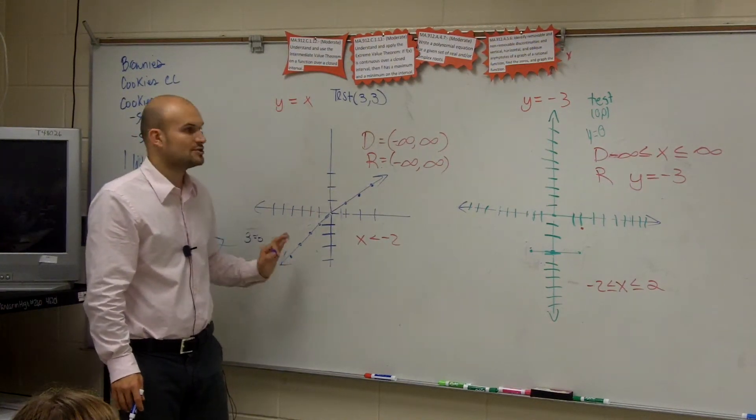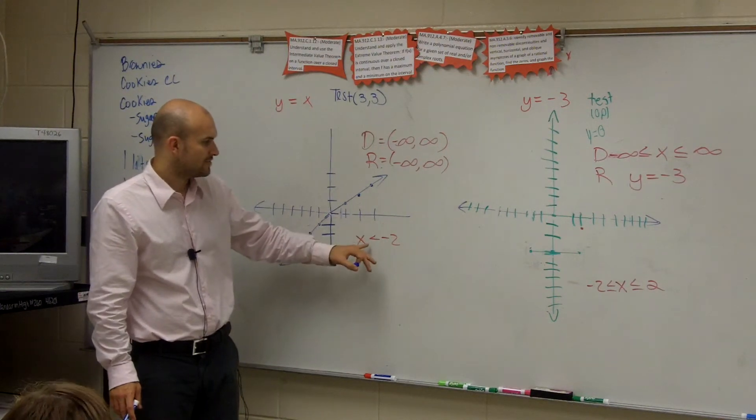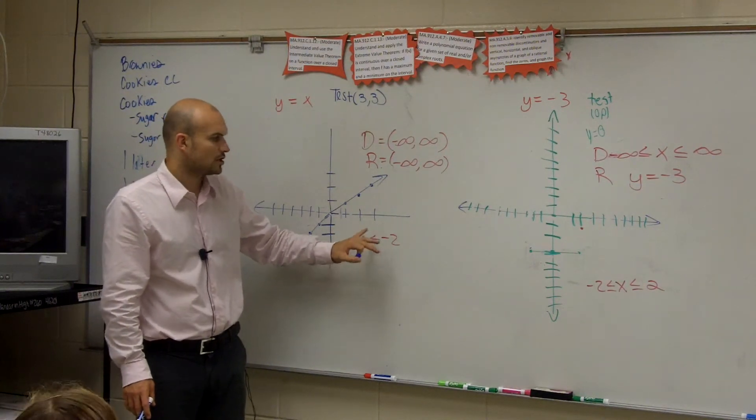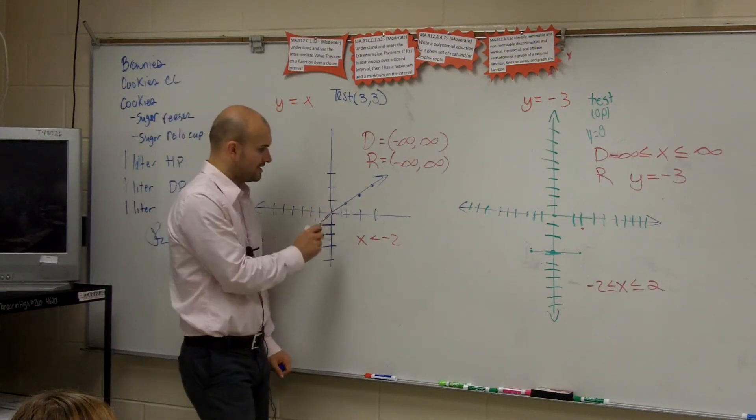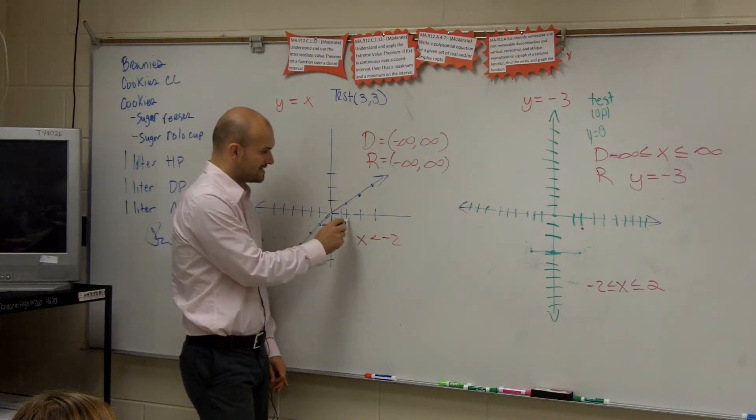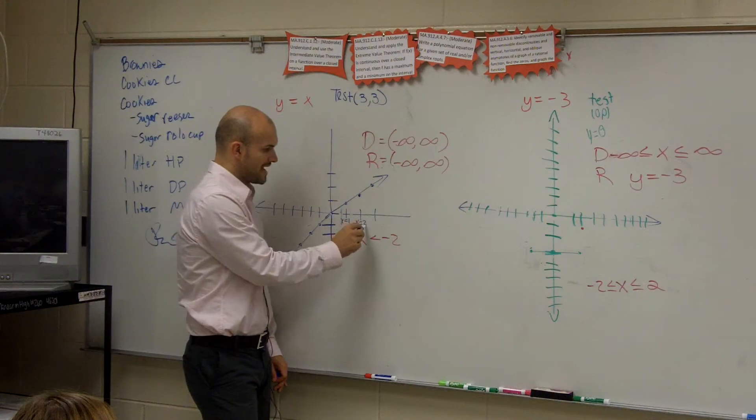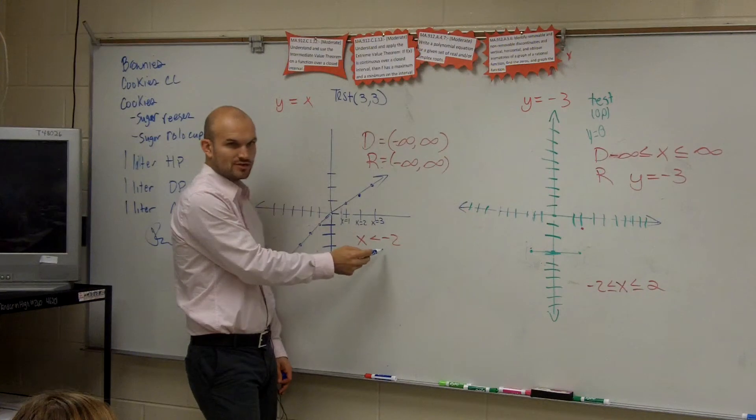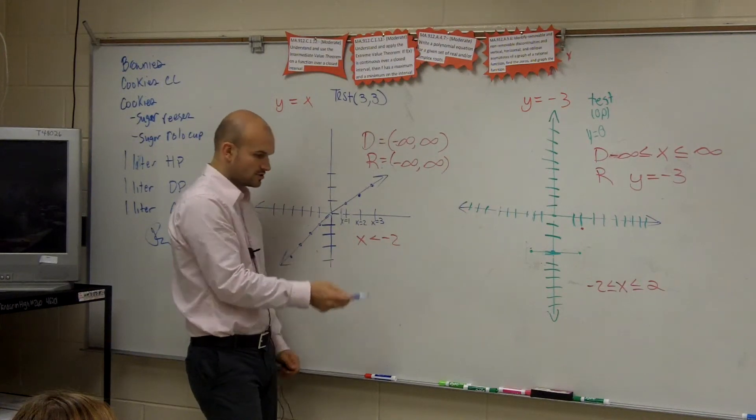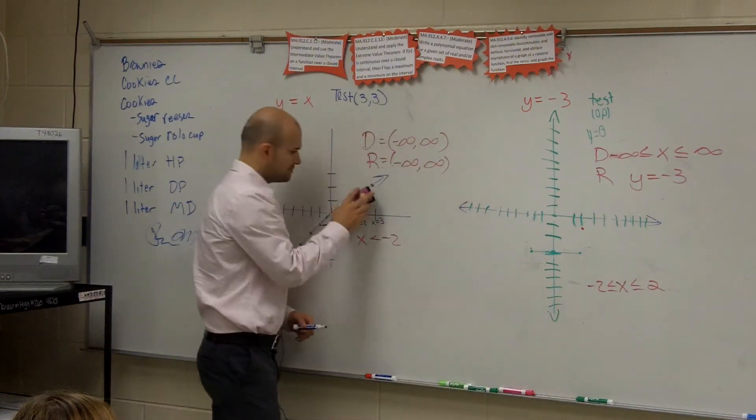Now, what I wanted you to do is I only wanted you to graph this graph when my x values are less than negative 2. So let's look at this point right here. This point is when x is equal to 1. This point is when x is equal to 2. And this one is when x is equal to 3. Do those fall under this constraint? No. So guess what? We're going to erase them.